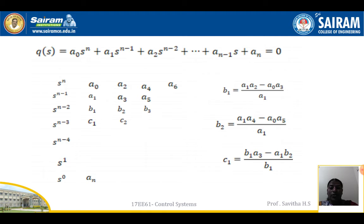For s^(n-2), we need to calculate the values. The formula: b1 = (a1*a2 - a0*a3) / a1, and b2 = (a1*a4 - a0*a5) / a1. For s^(n-3), c1 = (b1*a3 - a1*b2) / b1. Likewise, we need to calculate all the values down to s^0.